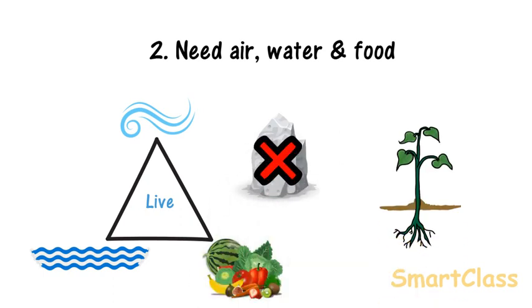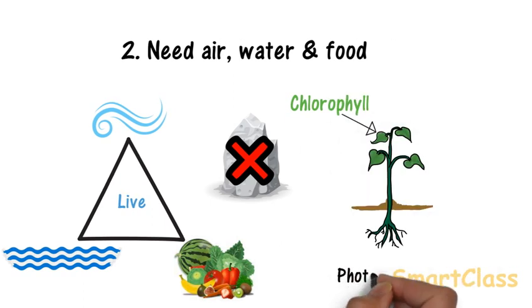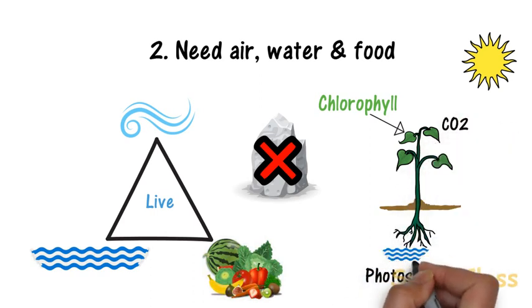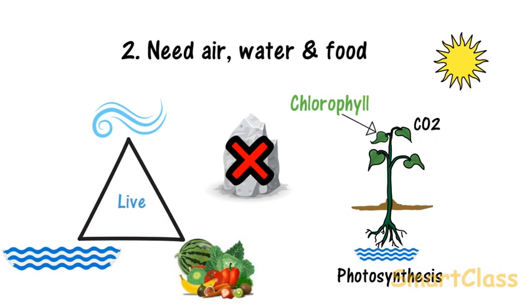The majority of plants have a green substance called chlorophyll in their leaves. Chlorophyll enables plants to make their own food by the process called photosynthesis. Plants use sunlight, carbon dioxide from air, and water from soil for photosynthesis. Animals cannot produce their own food, so they eat plants or other animals.